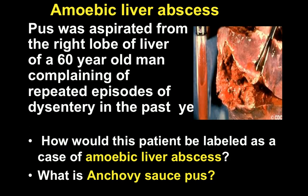The second scenario associated with this topic is from amoebic liver abscess. Pus was aspirated from the right lobe of the liver of a 60-year-old man — this is the pus which you see over here. The man complains of repeated episodes of discharge in the past year. How would you diagnose this case in the laboratory, or how would this patient be labeled as a case of amoebic liver abscess? And secondly, what is anchovy sauce pus?